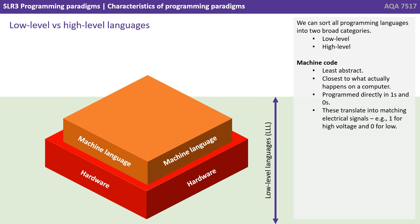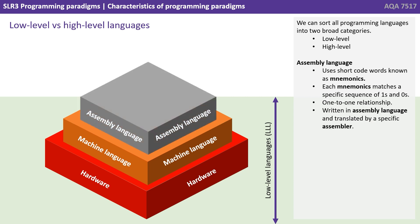Machine code is programmed directly in ones and zeros. These translate into matching electrical signals, e.g. one for high voltage or zero for low. Assembly language comes next. This uses short code words known as mnemonics. Each mnemonic matches a specific sequence of ones and zeros — there's a one to one relationship. It's written in assembly language and translated by a machine specific assembler.